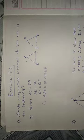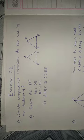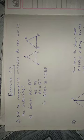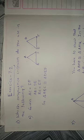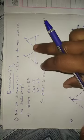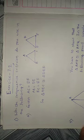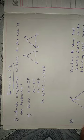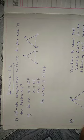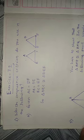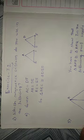Hi friends, today I am going to solve the problems of Exercise 7.2. Yesterday I gave a theory on how to solve all those problems. We studied four types of congruence of triangles — four criteria of congruence of triangles. Now, based on all those four criteria, we have to solve all these problems.